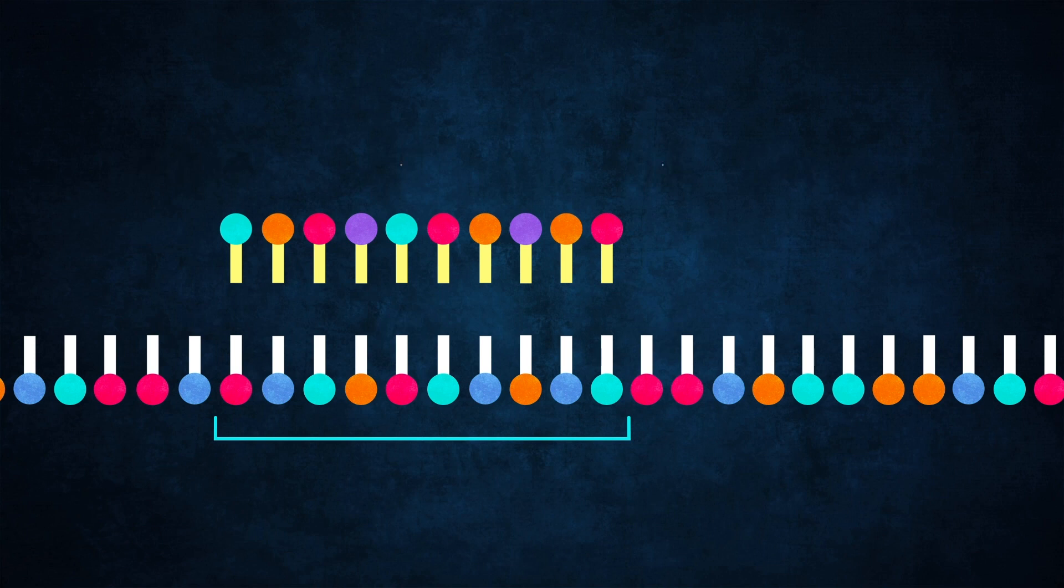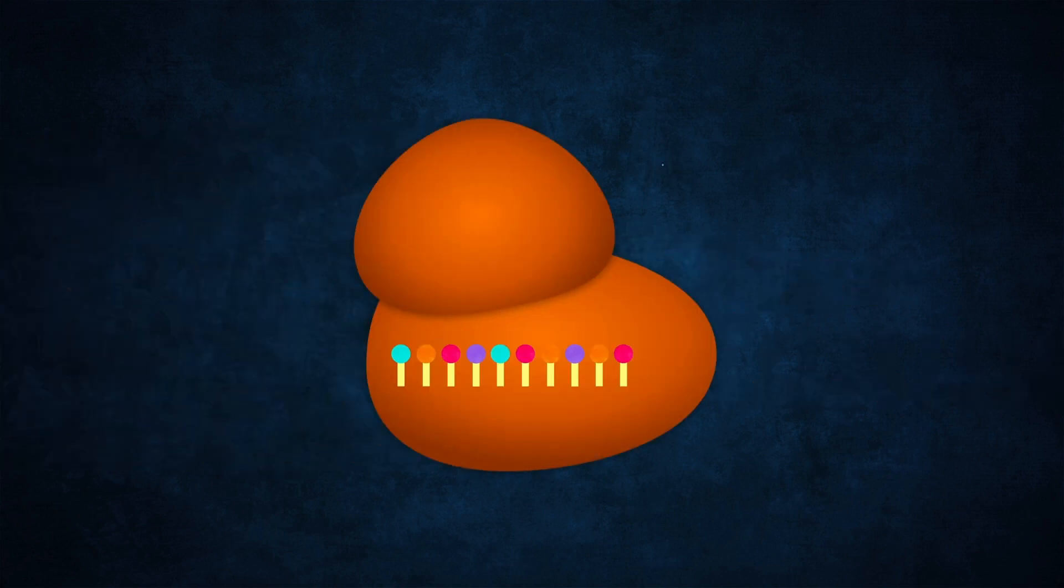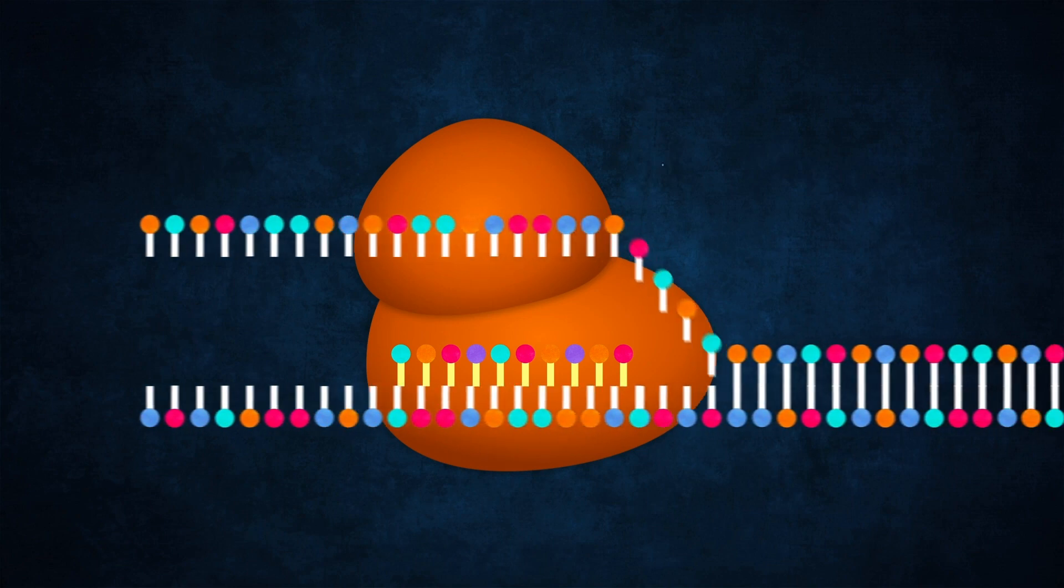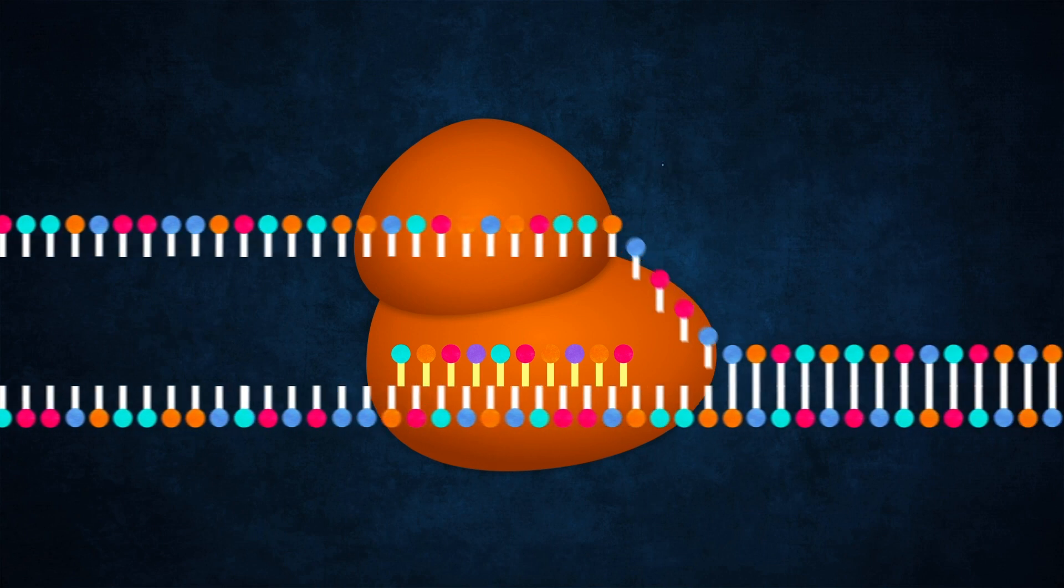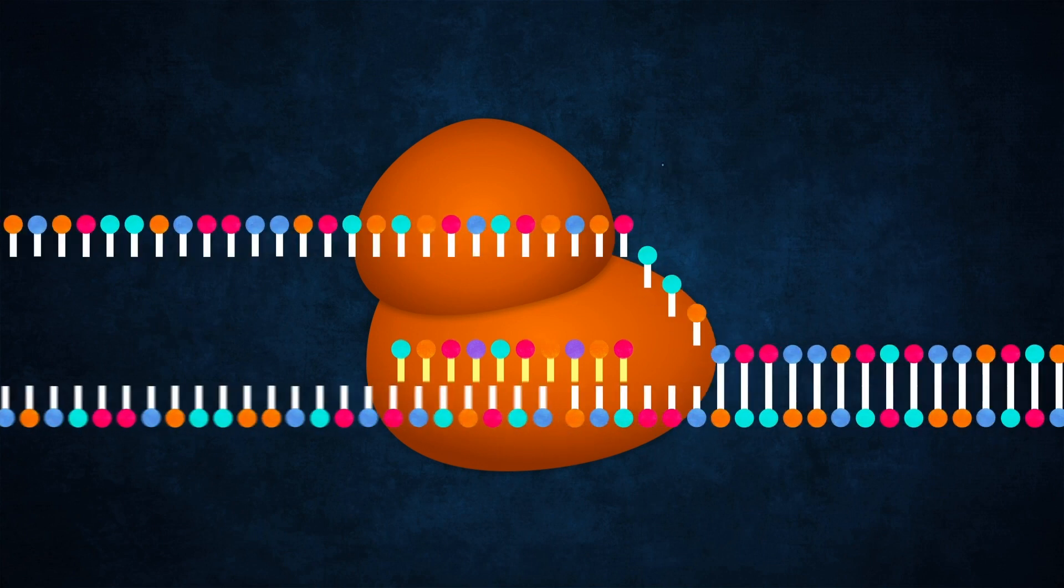Once you know what section of DNA you want to target, the CRISPR Cas9 complex can get to work. The Cas9 enzyme starts by unzipping bits of the DNA double helix while the RNA molecule works its way along the exposed base pairs looking for a perfect match. Once the perfect match is found, Cas9 cuts out the gene at this point.